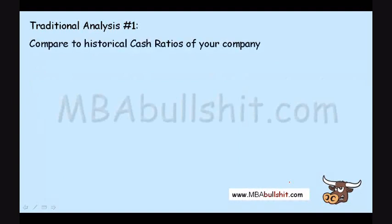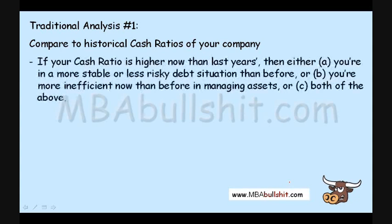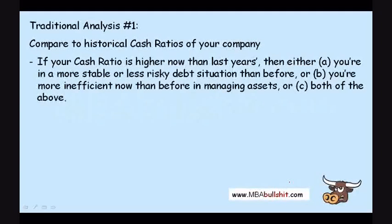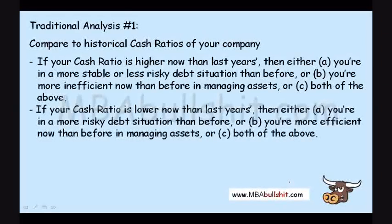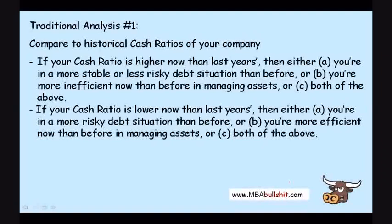For traditional analysis, first compare the cash ratio to the historical cash ratios of the company. If the cash ratio is higher now than last year's, then either it is in a more stable or less risky debt situation than before, or it's more efficient now in managing cash — meaning the company can operate properly even without much excess cash, or both. If the cash ratio is lower now than last year's, then either it's in a more risky debt situation or it's more efficient in managing cash, or both.